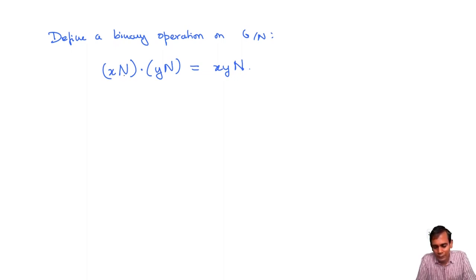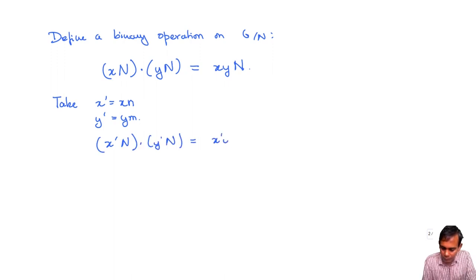The coset XN, this X is not uniquely determined. I can replace X by any other element of this coset, and the right hand side should not change. So let's check that this is well defined. If I take X prime equals XN, Y prime equals YN, then what we have is X prime N dot Y prime N is equal to X prime Y prime N. But that is X, N, Y, M, N.